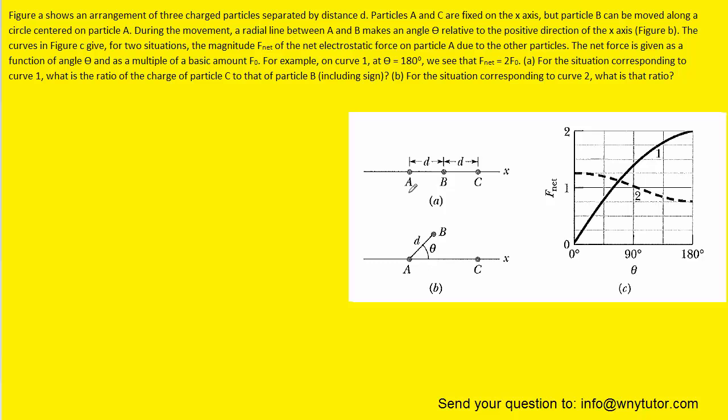Now on to part B. We're going to assume that charge A is positive and figure out what the signs on these two would be. If we keep charge B where it's located, the angle would be 0 degrees, and we can see from the graph that the net force would be 1.25 times this value F0. It's important to note that at 0 degrees, we have the maximum force acting on charge A. The fact that it's a maximum implies that the forces that charges B and C are exerting must be pointed in the same direction.